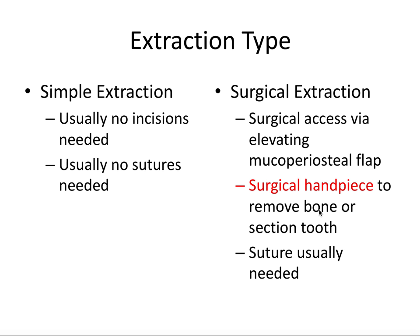A surgical handpiece is used to remove bone or section the tooth. As soon as I pick up a surgical handpiece it becomes a surgical extraction — that's really the limiting step in determining when we get to a surgical extraction. And a suture is usually needed since we had to open up a flap for surgical visibility and access. Let's focus on simple uncomplicated extractions in this video.